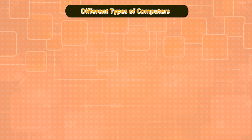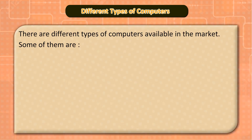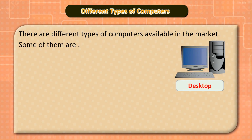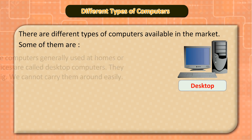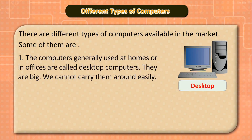Different Types of Computers: There are different types of computers available in the market. Some of them are: Desktop — the computers generally used at homes or in offices are called desktop computers. They are big and we cannot carry them around easily.